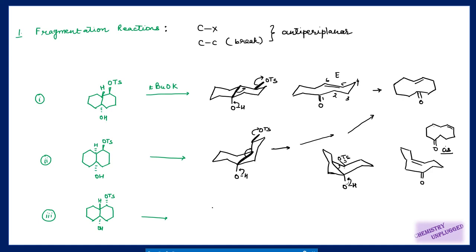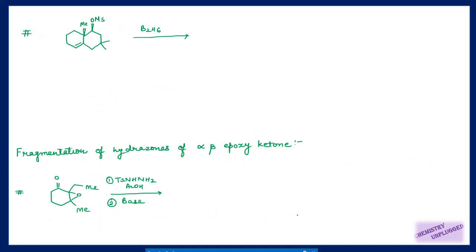Now let's look at another case with trans decaline where the OH and tosylate group are cis to each other. At the 1,3 position, if one group is axial, the other is also axial. When I try to break this bond and remove the tosylate, the carbon-leaving group bond and the carbon-carbon bond are NOT anti-periplanar — so they cannot break, and this will not give the desired fragmentation product.